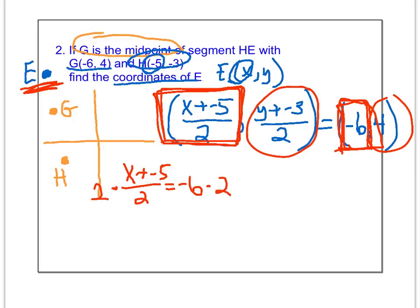Solve this algebraic equation. First, multiply both sides by 2. That gives you X plus negative 5 equals negative 12. Then add 5 to both sides, and we've got our answer for X. X equals negative 7.